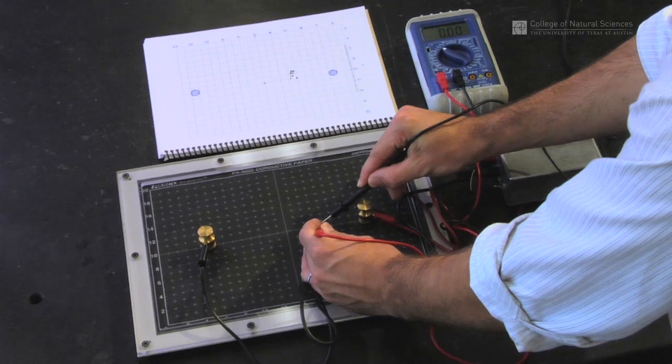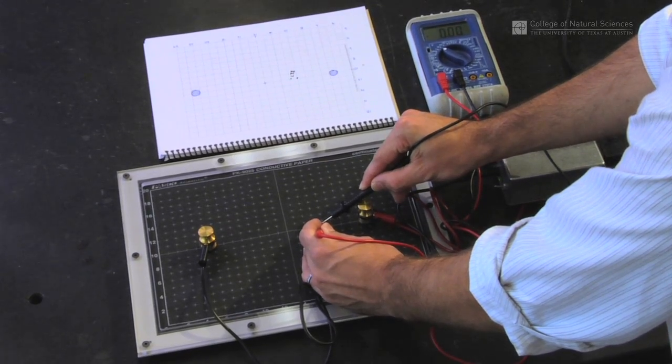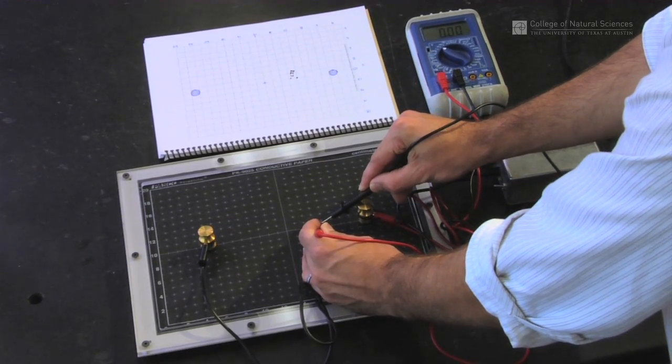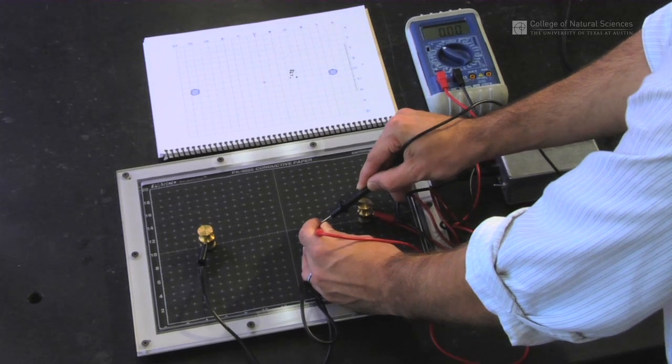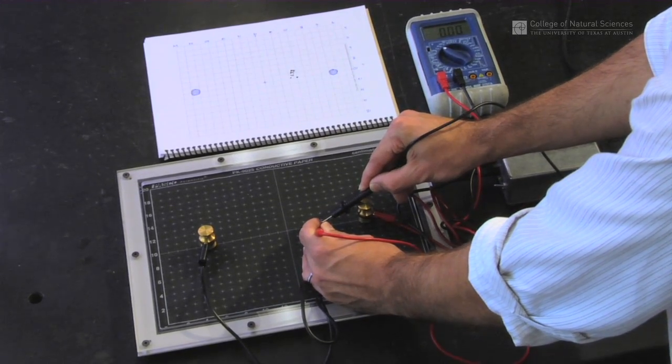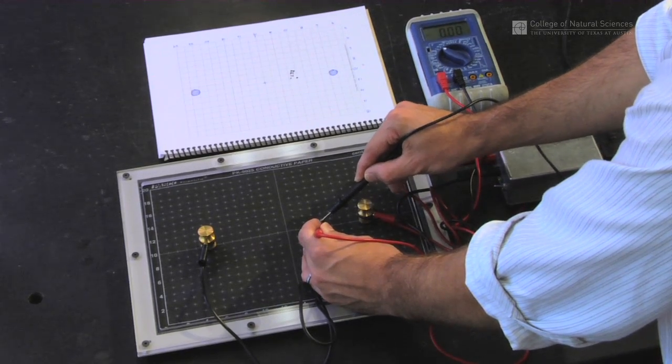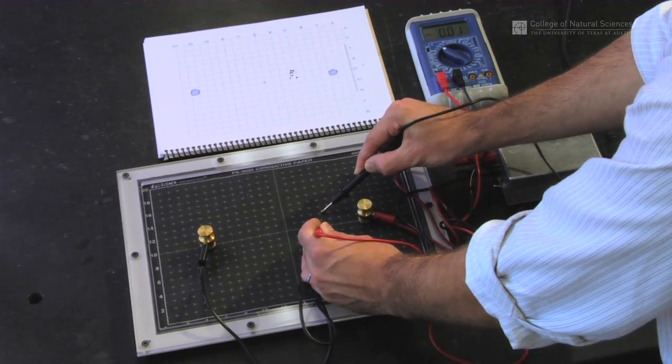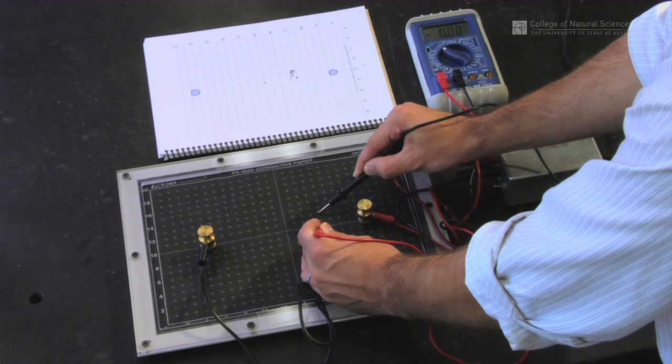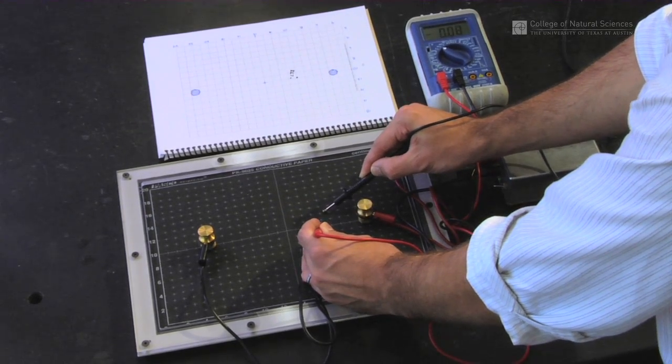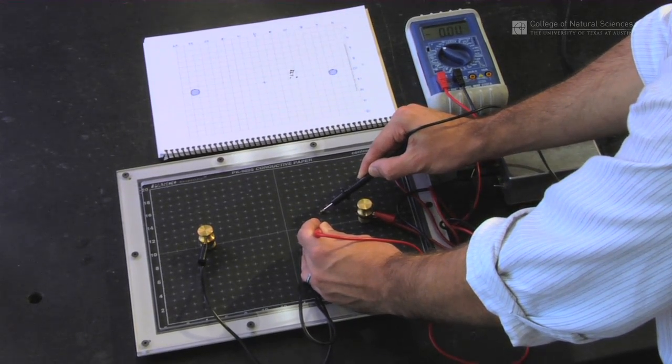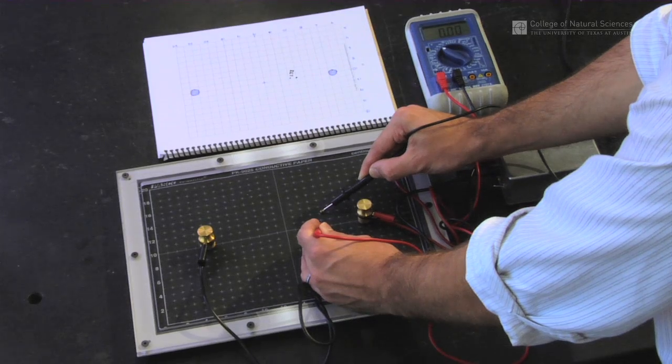Now, I connect my two probes together. Again, they read zero. Now, I'm going to trace along the equipotential. And by definition, the equipotential is going to mean that the multimeter should read zero volts. I'll move a little bit away and I'll move the probe slightly back and forth until I get zero volts again.